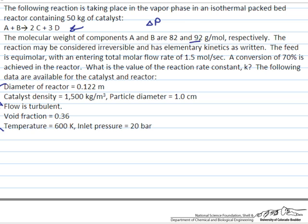We're given information about the molecular weights of the two feed components. The reaction is irreversible, and elementary kinetics is written, and the feed is equimolar with an entering total flow rate of 1.5 moles per second. We know that a conversion of 70% is achieved, and we want to determine the value of the reaction rate constant.